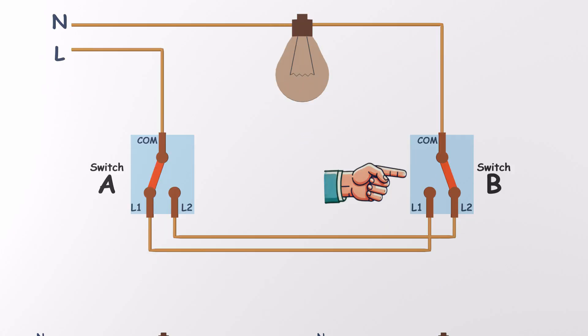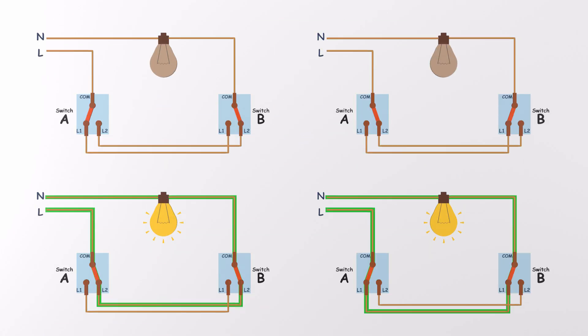These two switches can be flipped into four possible combinations. When both switches are in the same position, up-up or down-down, the light turns on. But if they're in opposite positions, one up, one down, the light stays off.